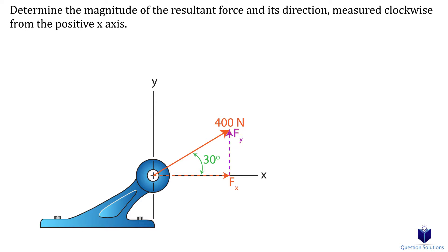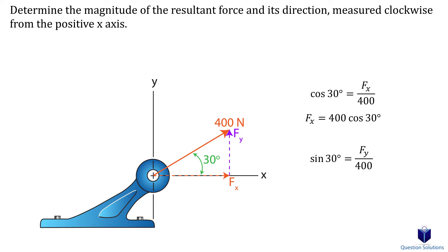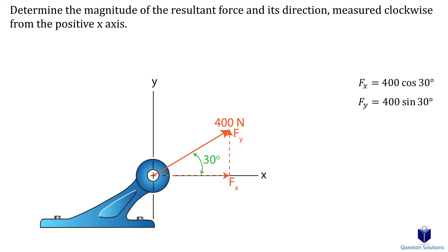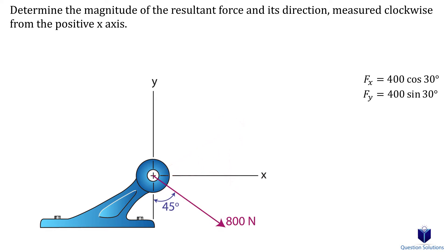The 400 newton force is the hypotenuse of this triangle. Since we want the adjacent length we use cosine, because that's adjacent over hypotenuse. For the y component we use sine, since that's opposite over hypotenuse. The y component is opposite to our angle, that's why we used sine. This is not always the case — do not think that y components are always sine and x components are always cosine. This is a pitfall many students fall into.